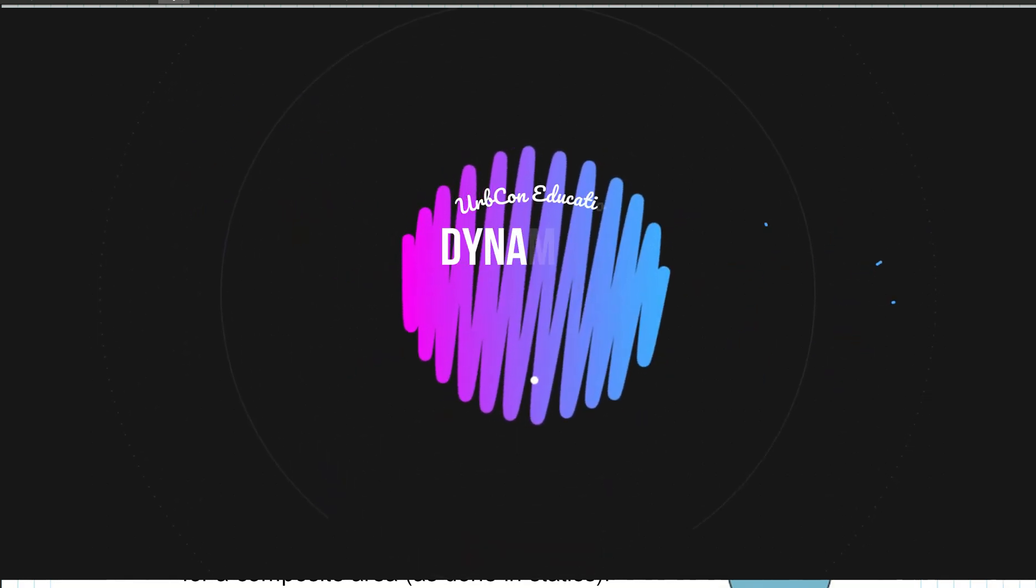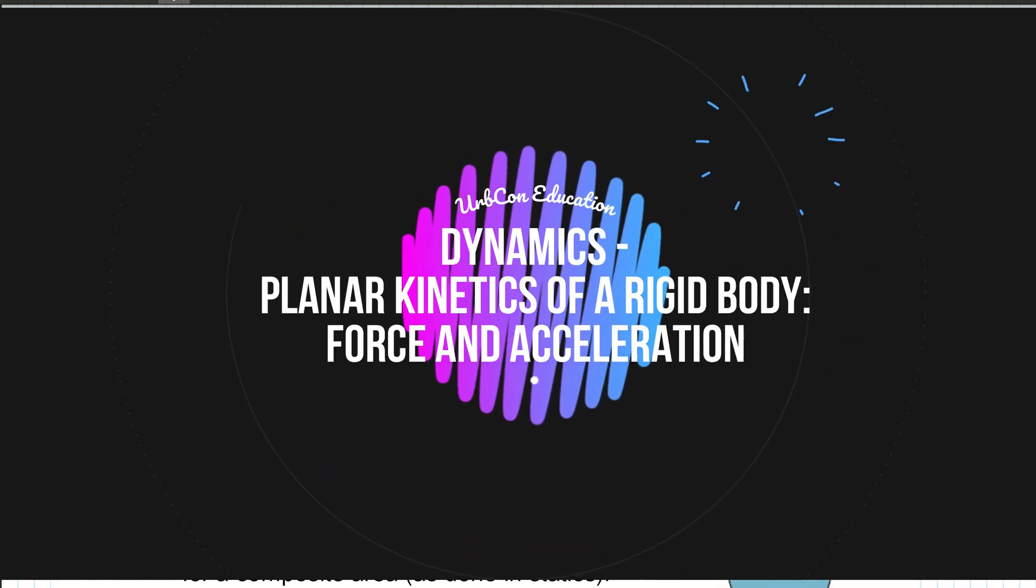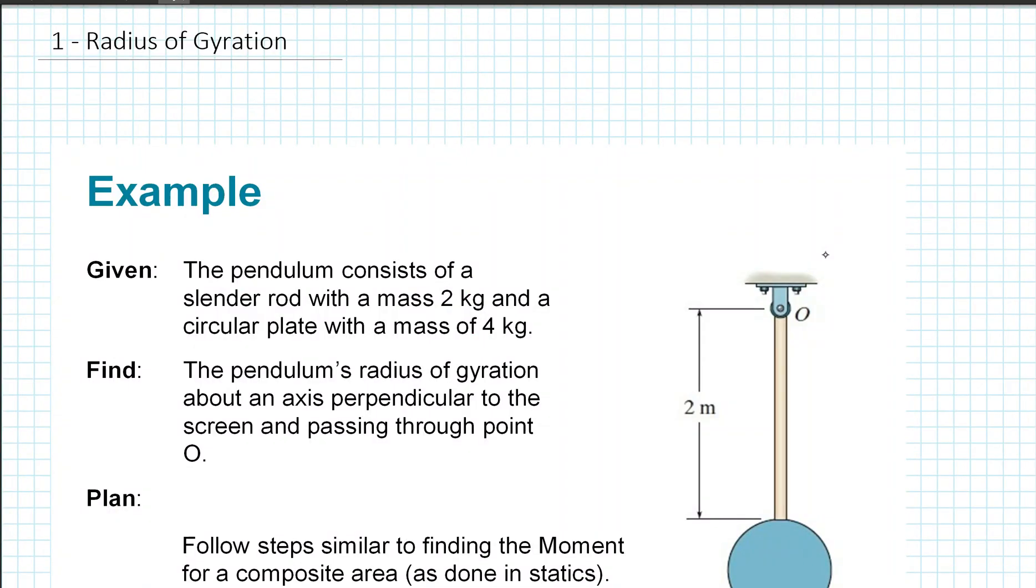Hey everyone, in this mini-lecture we're in the area of planar kinetics of a rigid body with force and acceleration. So in our first example, we'll look at the radius of gyration.